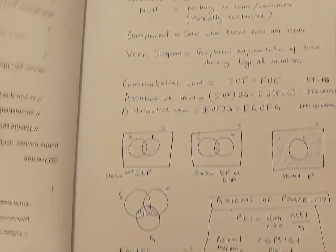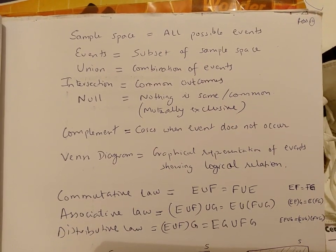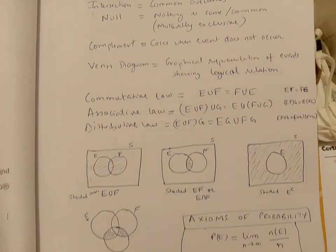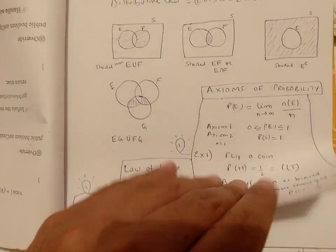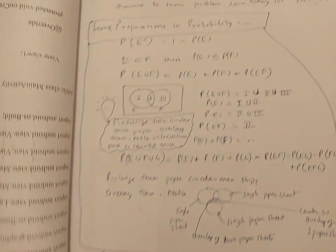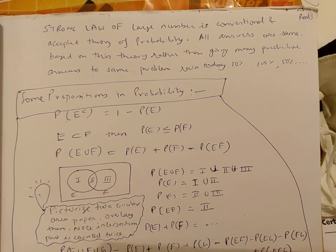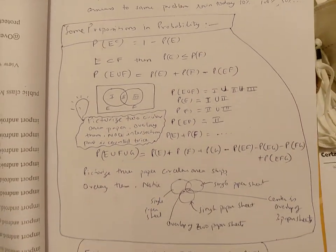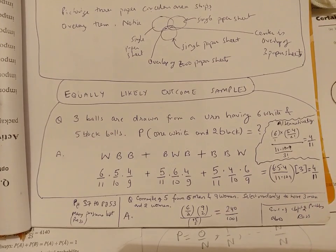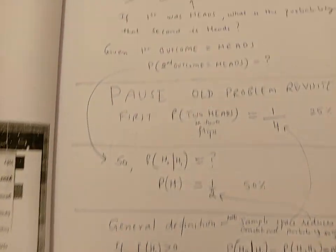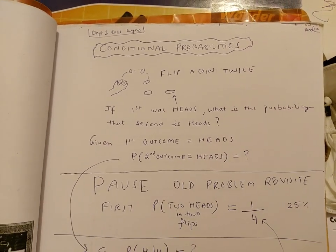By sets we can understand probability theory. There are two definitions for probability: one is empirical and the other one is the classic definition. So we'll start with the other book, one more book.